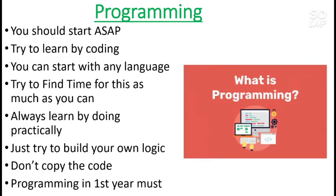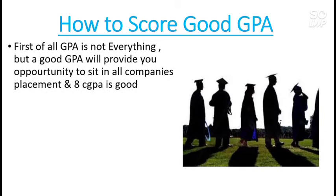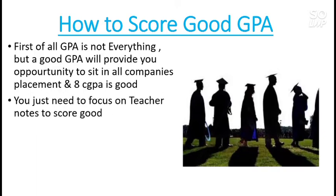Programming in the first year is a must. Now I will talk about how to score good CGPA or SGPA. CGPA is not everything — it will only provide you the opportunity to sit in company placements, but the actual placement depends on your skill. Around 8 CGPA overall by the sixth or seventh semester is enough for most companies. Just focus on your teacher's notes — no coaching or extra videos needed.